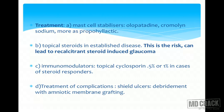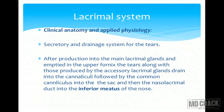Treatment of the complication of shield ulcers is also important. These form as a result of inflammation on the corneal surface causing recurrent erosions, with mucous debris on top leading to shield ulcer formation. Debridement with multilayer or single-layer amniotic membrane transplantation can lead to good healing and prevent corneal scarring.